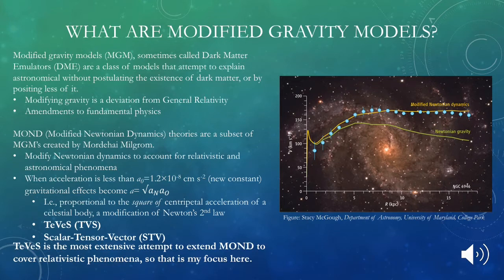There are general constraints for things that are part of the MOND family of theories. Generally speaking, when acceleration reaches a certain point — in this case, 1.2 times 10 to the negative 8, which becomes a new constant — the gravitational effects have a corresponding change. In other words, gravitational effects are always proportional to the square of the centripetal acceleration of a celestial body, constituting a modification of Newton's second law.